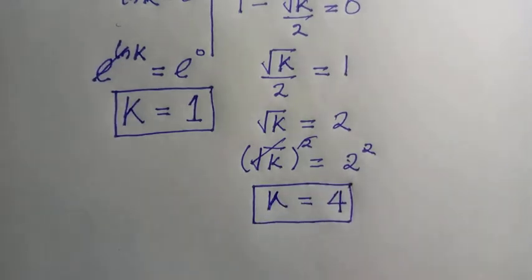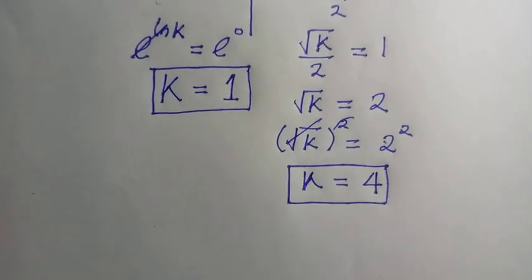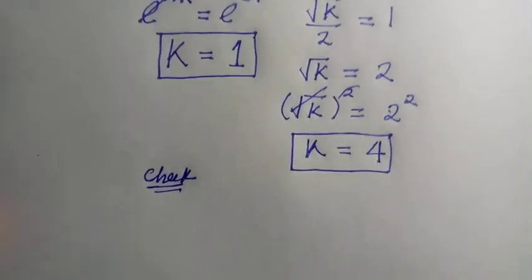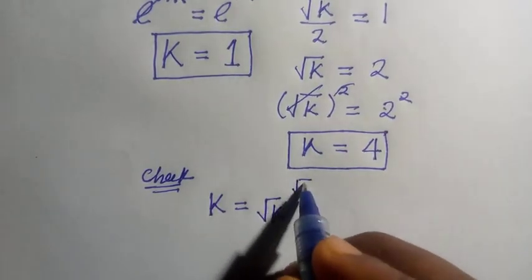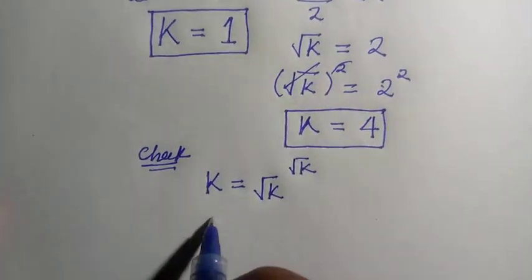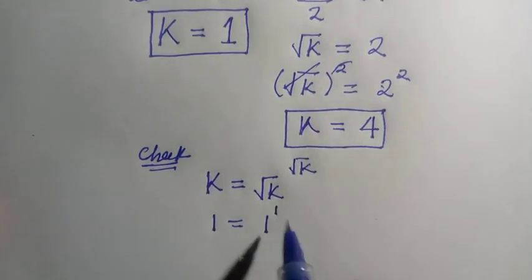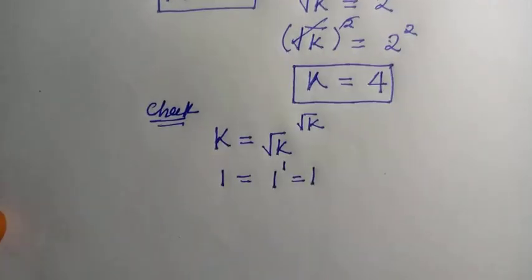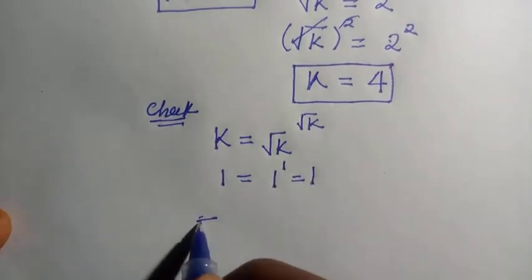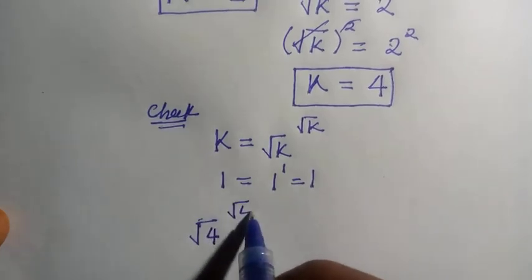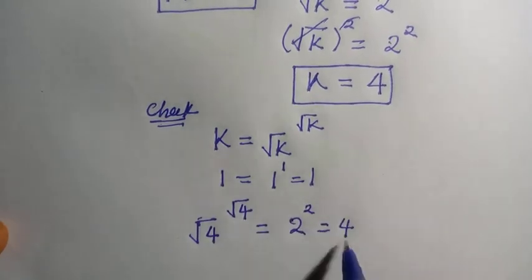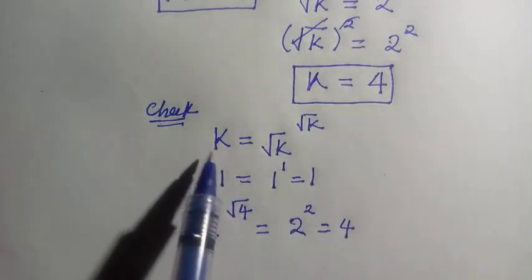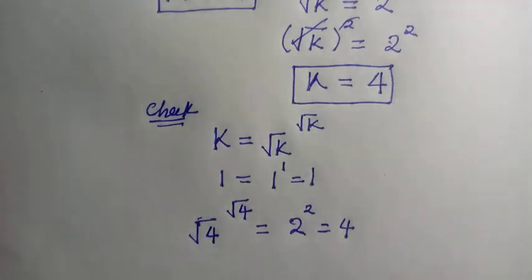So here are the values of k — both are real numbers. We need to verify that both satisfy the given problem. When k equals 1, substituting into k equals square root of k raised to power of square root of k: square root of 1 is 1, and 1 raised to power of 1 is 1. It's satisfied. And when k equals 4, the left-hand side becomes square root of 4 raised to power of square root of 4, which is 2 to the power of 2, and that equals 4. So the left-hand side equals the right-hand side. And here is how to solve this problem.